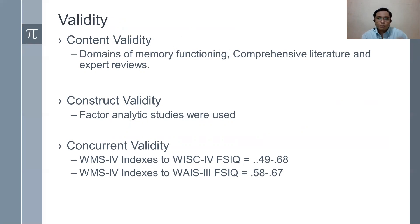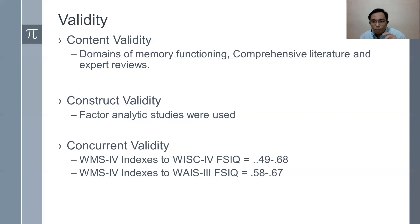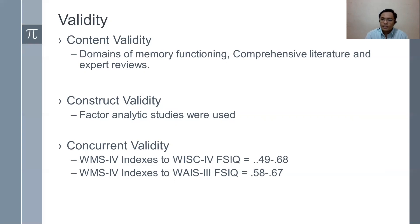The current version has much more established literature and expert reviews compared to older versions. There is also construct validity using factor analytic studies, and concurrent validity — correlated with the Weschler Intelligence Scale for Children (0.49 to 0.68) and with the Weschler Adult Intelligence Scale 3 (0.58 and 0.67).